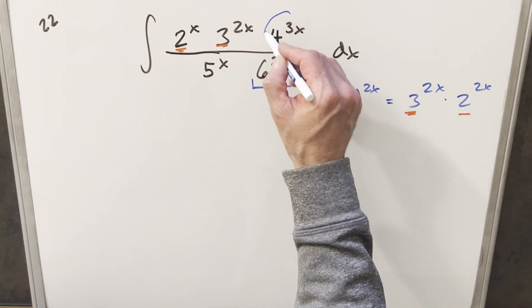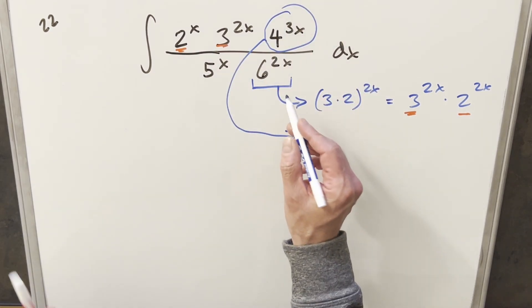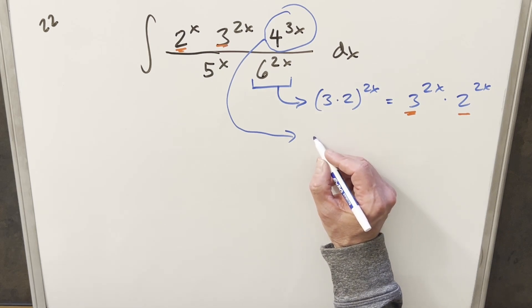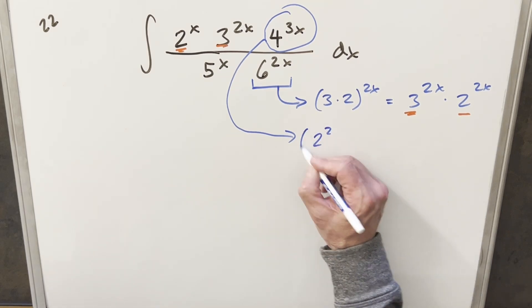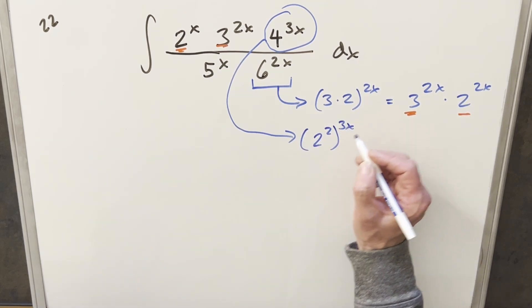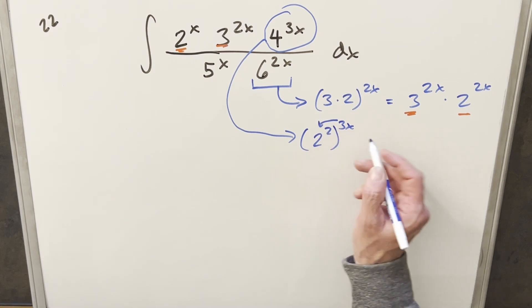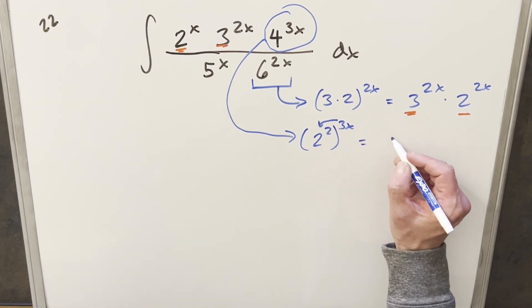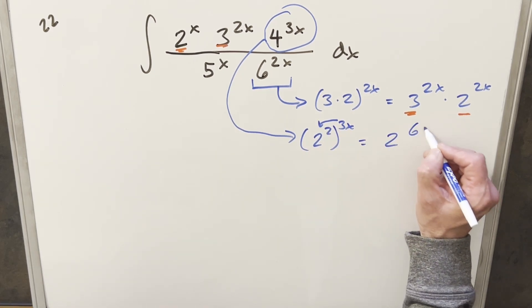And then also what I can do, let's just take a look at 4 to the 3x. We'll bring that down here. Now for 4 to the 3x, for 4, I can write that as 2 squared. So we have 2 squared to the 3x. But then by exponent properties, we can multiply that in. And this is actually going to become 2 to the 6x.